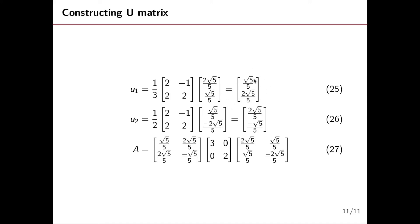So we compute one over the first singular value times our matrix A times our first orthonormal vector from V, and that gives us u1. The same applies to u2 — doing the multiplication we get our u2. Finally, we place u1 and u2 in the right positions in the U matrix, use our diagonal Sigma matrix, and note that the transpose of V will still be the same as the original V matrix.